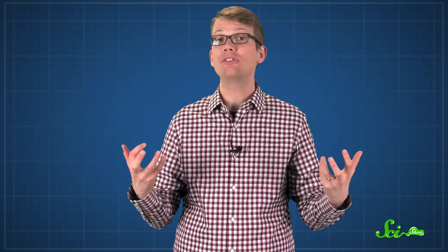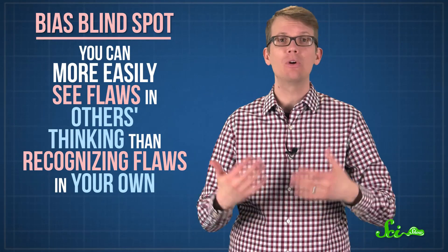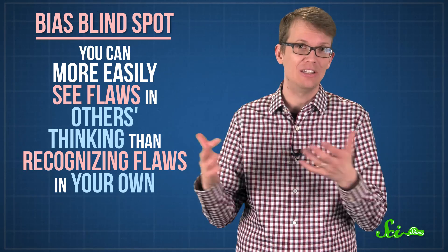And it wasn't just that they were being overly critical of others. People were just plain better at finding flaws in their own reasoning when they thought it was someone else's. This is called the bias blind spot. You can more easily see flaws in others' thinking than you can in your own.